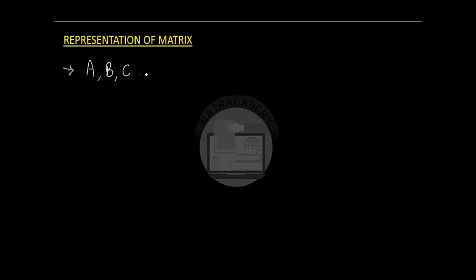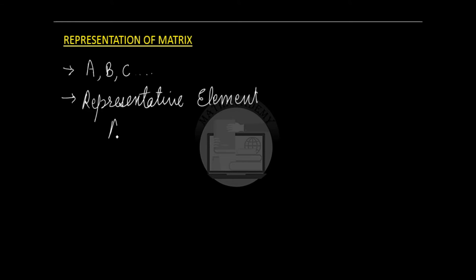A matrix can be represented by a capital letter A, B, C and so on. We always represent a matrix by a capital letter. The matrix can also be represented by the representative element. If there is a matrix A and it is represented by the representative element Aij, this i represents the row in which that element is lying in the matrix and j represents the column in which that element is lying in the given matrix.